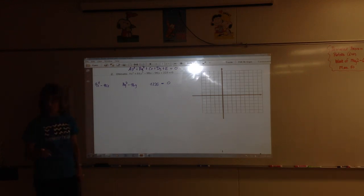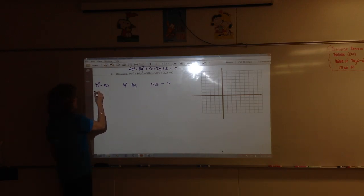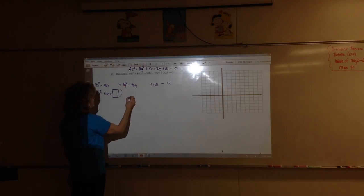In order to graph the ellipse, the first thing we've got to do is put it in standard form. So that's going to require completing the square. I'm going to rearrange these so that I have 9X squared minus 90X and then 16Y squared minus 96Y, and then I have 225 equals zero.